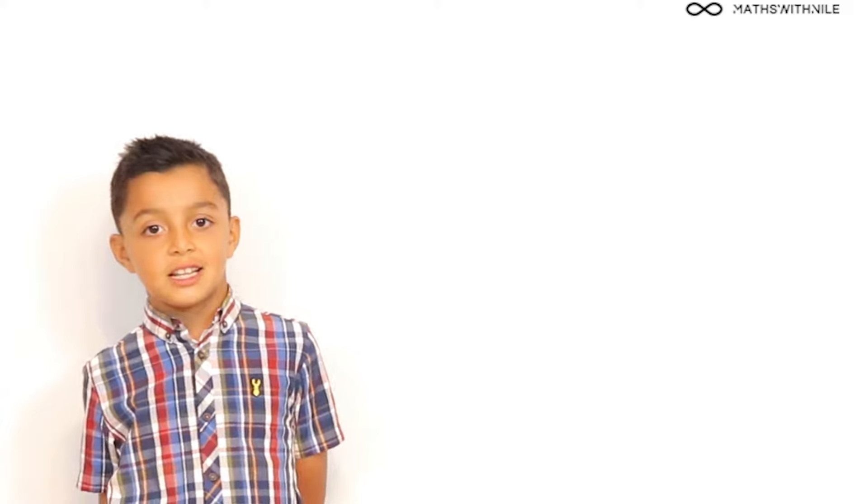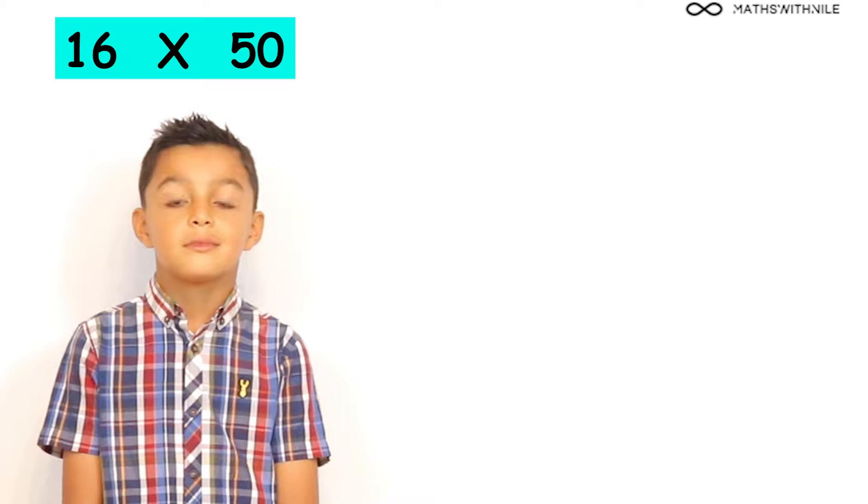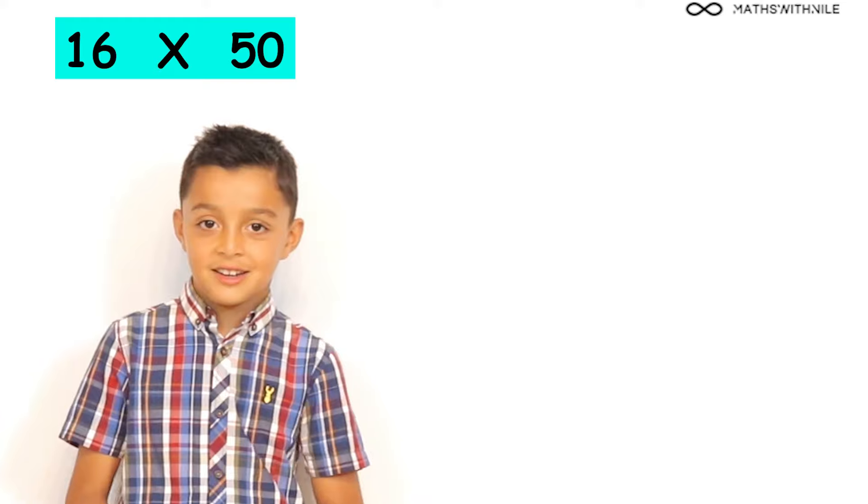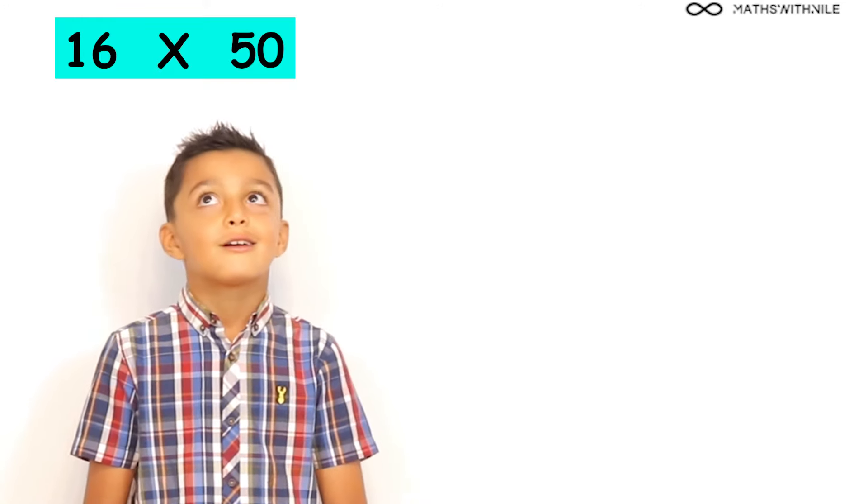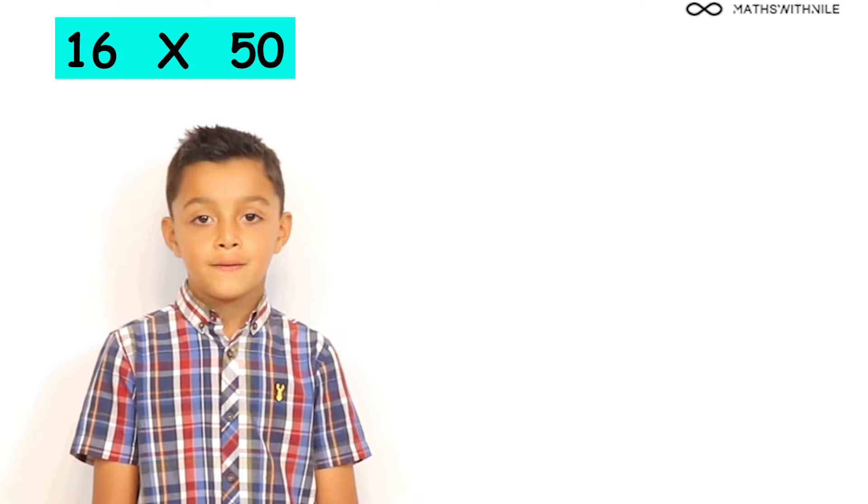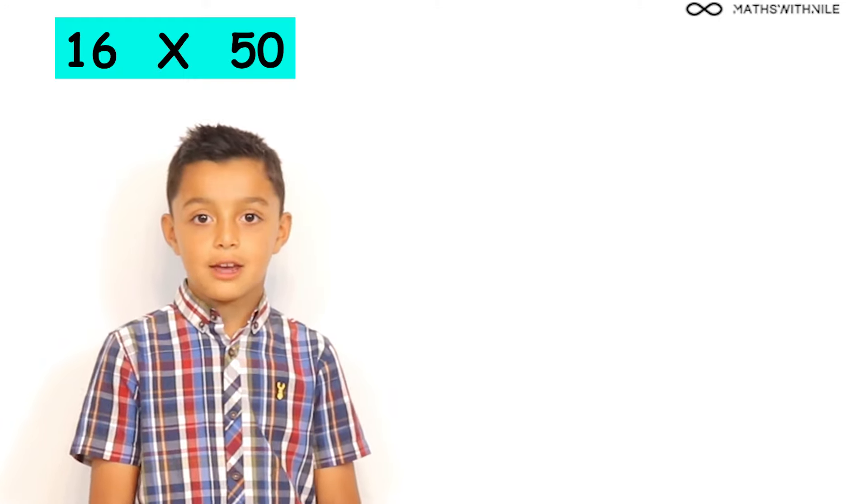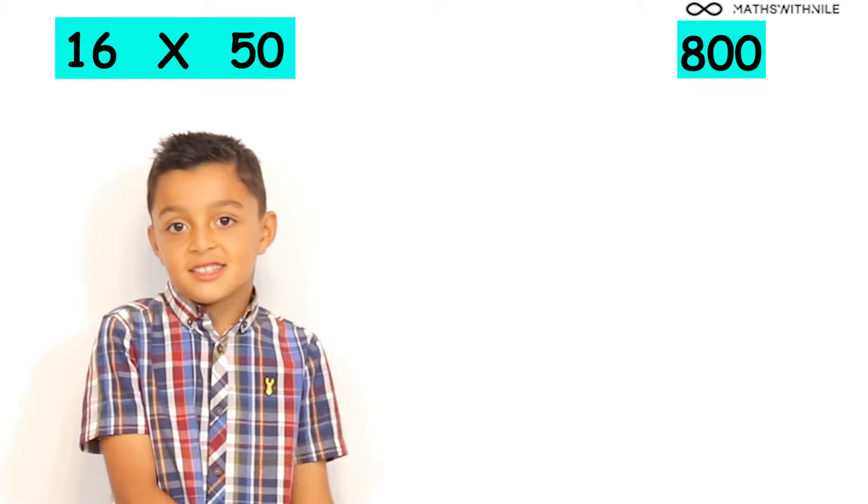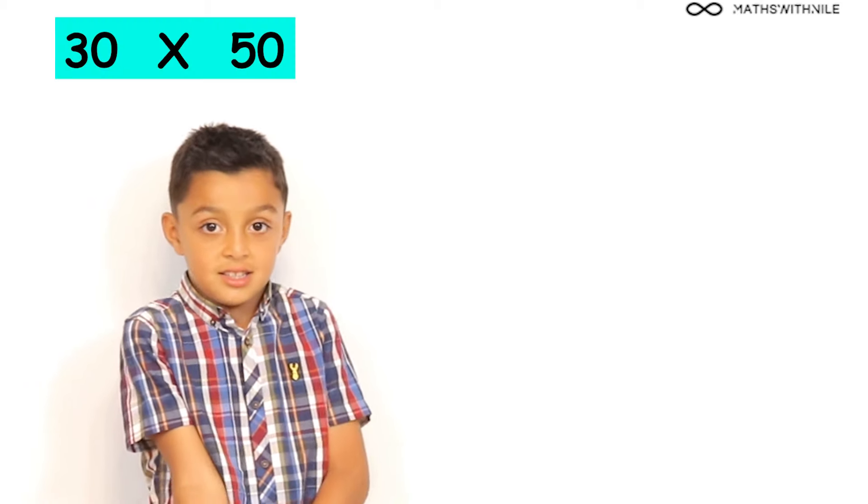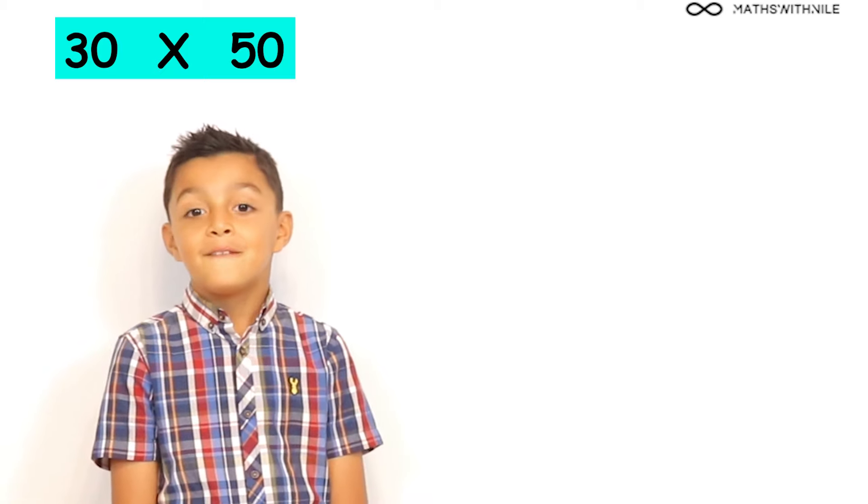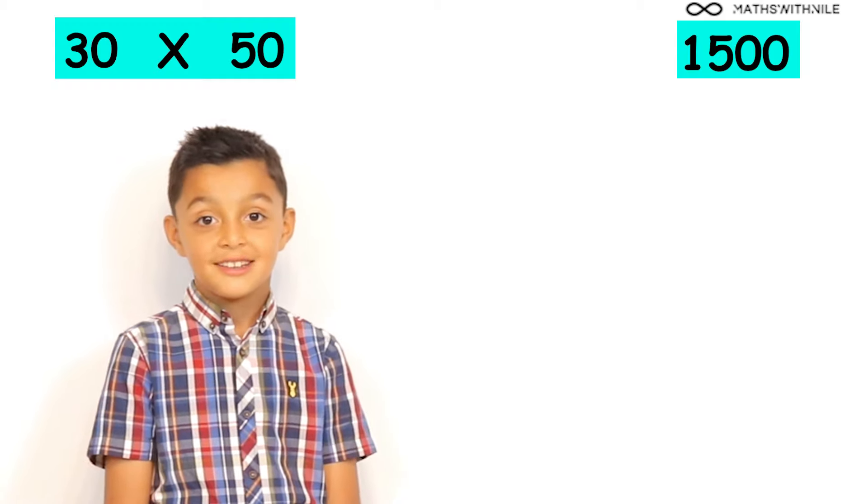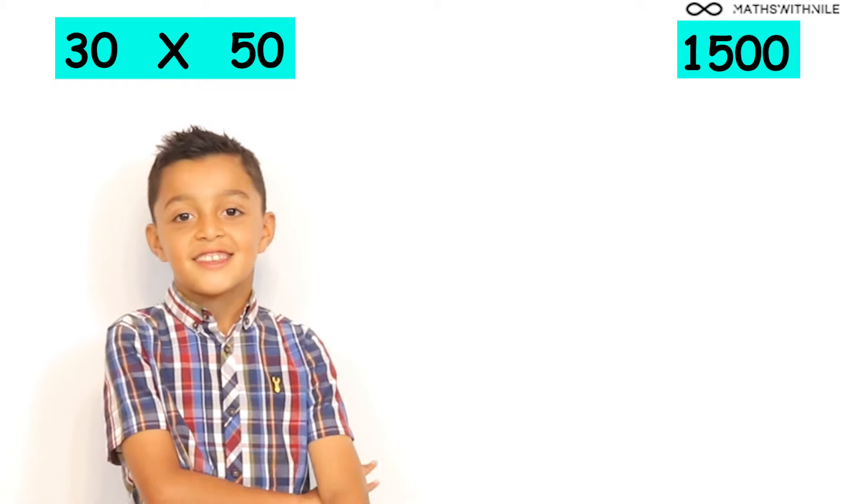So, I'm going to give you a really tricky one. Okay. What is 16 times 50? Well, we just have to half 16, which is half 10, which is 5, and then half 6 is 3. So, 8. So, 800. Excellent Niall. Very good. So, what is 30 times 50? 1,500. Brilliant Niall. Excellent.